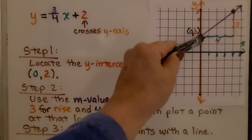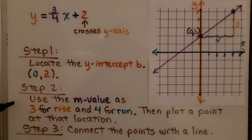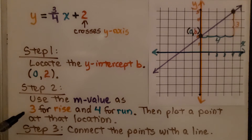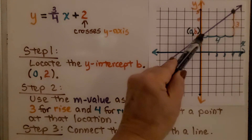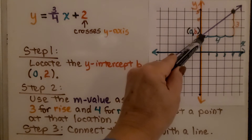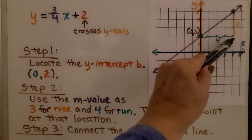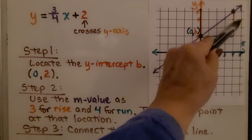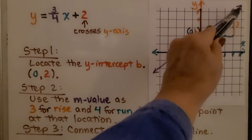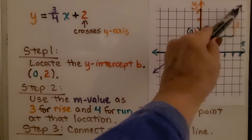That's where x is 0 and y is 2. The next step is we use that m-value, the 3/4, as 3 for the rise and 4 for the run at that location. So I'm going to count over to the side for the run: 1, 2, 3, 4. Then I'm going to count up 3: 1, 2, 3 for the rise, and that's where our point is going to be.